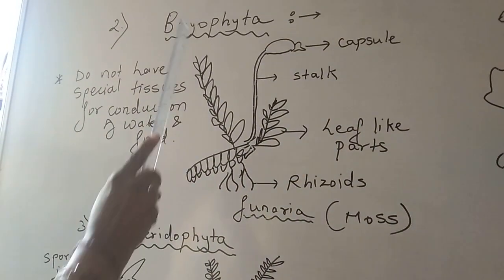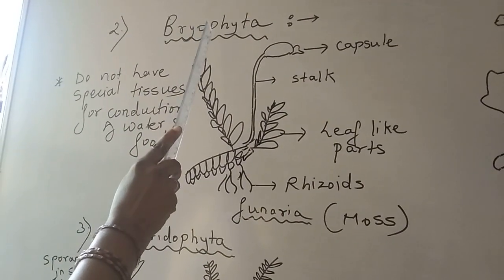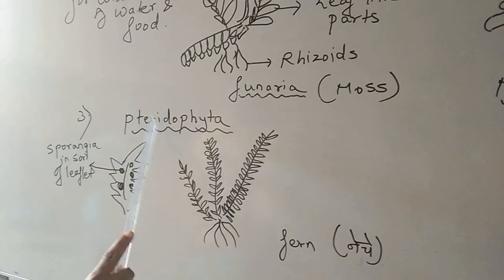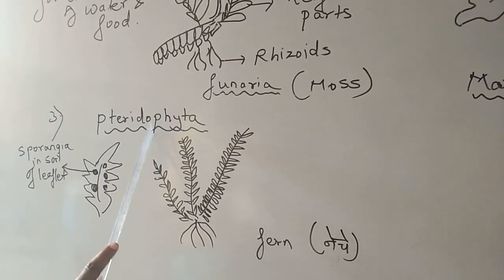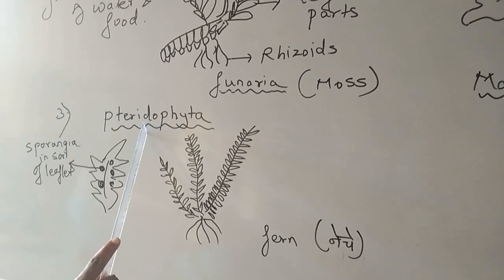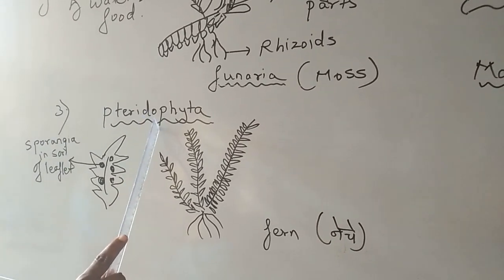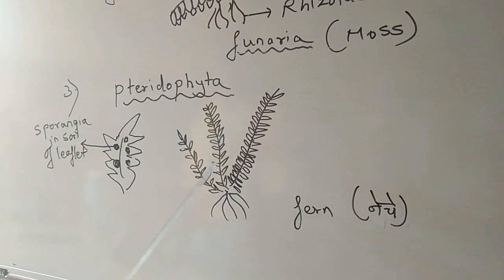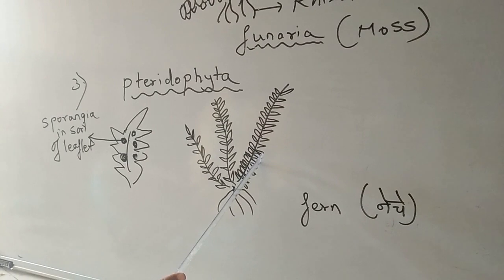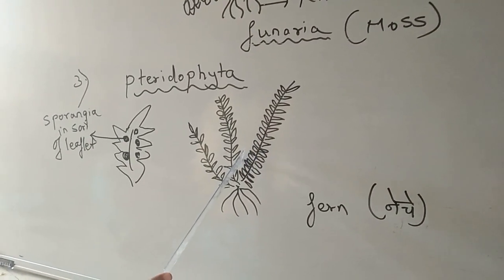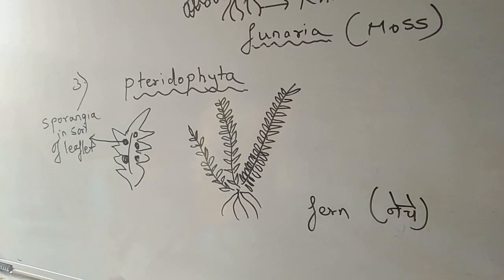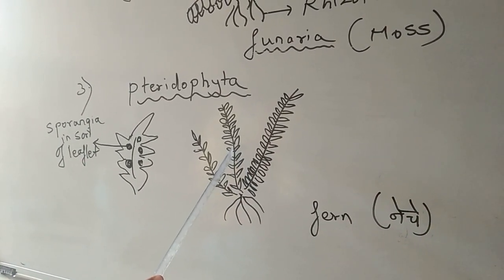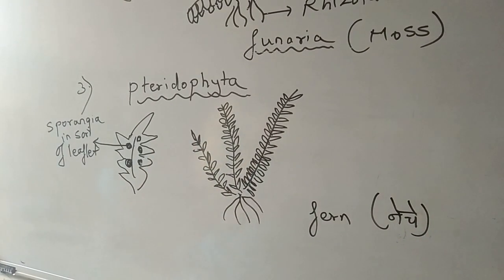That is why we can say they do not have special tissues for conduction of water and food. These are the general characteristics of Bryophyta. Now we are going to study about the next division: Pteridophyta. The common characteristics of Pteridophyta are: plants have well-developed roots, stem, and leaves. Secondly, they have conducting tissue — that means xylem and phloem will be present. Third, they reproduce sexually by spore formation.